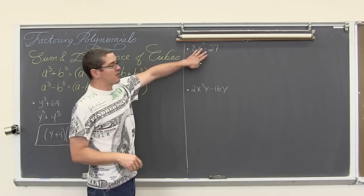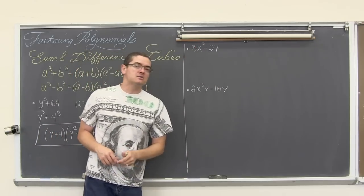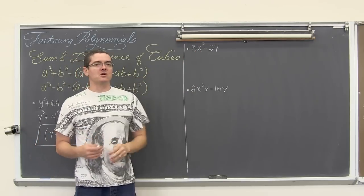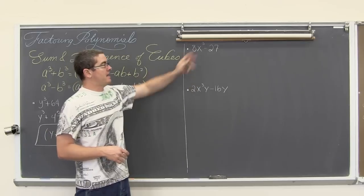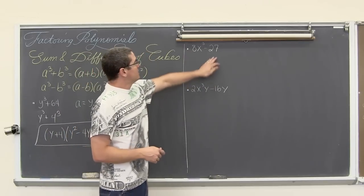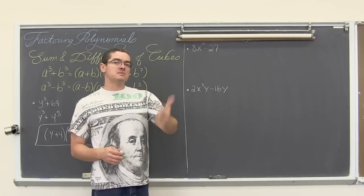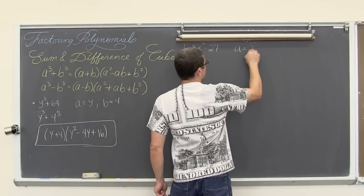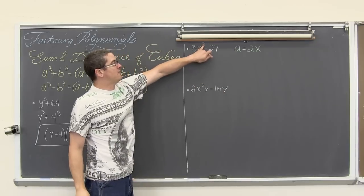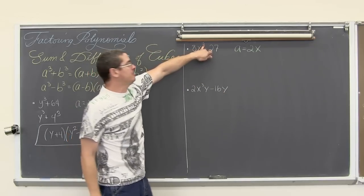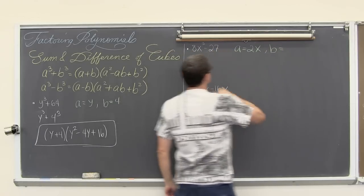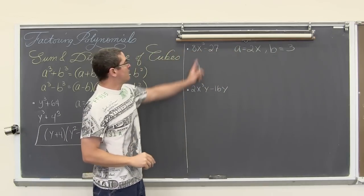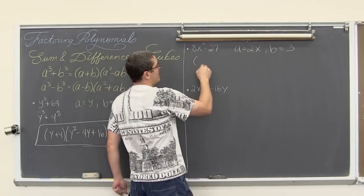We have two more examples. This one is also very straightforward: 8x cubed minus 27. I wanted to show you that you can have a coefficient in your first term as long as it is a perfect cube as well. The cube root of 8 is 2, and the cube root of 27 is 3, because 3 times 3 times 3 is 27, just like 2 times 2 times 2 is 8. That means a is equal to 2x, and b is equal to 3. Following our pattern for a difference of cubes, we have a minus b: 2x minus 3.